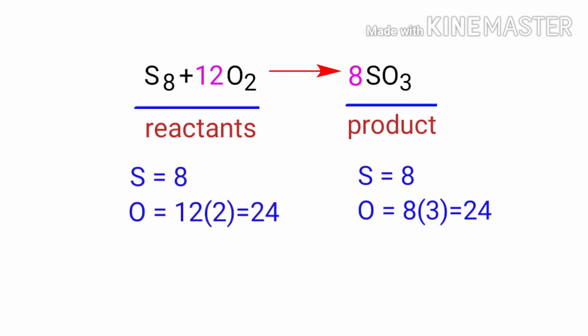The equation is now balanced. There are 8 sulphur atoms and 24 oxygen atoms on both sides.